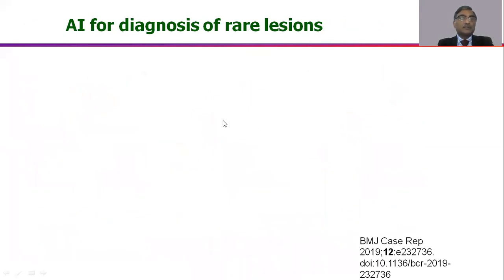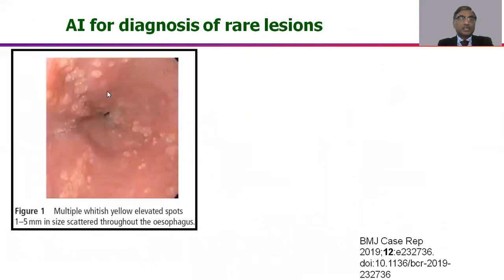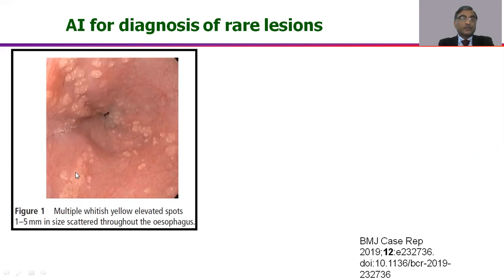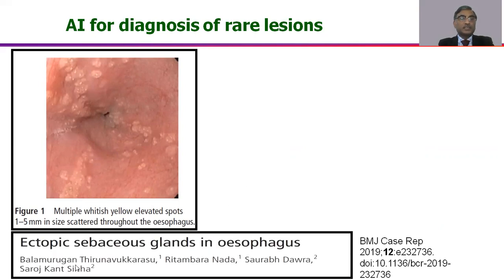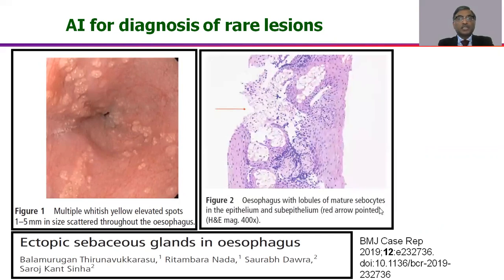AI can become very handy for diagnosis of uncommon or rare lesions. During the development of our automatic software for lesion detection, recording, imaging, and automatic report generation, we came across a patient where we were not confident about the lesion. The software searched open sources on the internet and suggested this is an ectopic sebaceous gland. We took a biopsy and it showed mature sebocytes, confirming the diagnosis. This represents another innovative application, though it is still in the evolving phase.